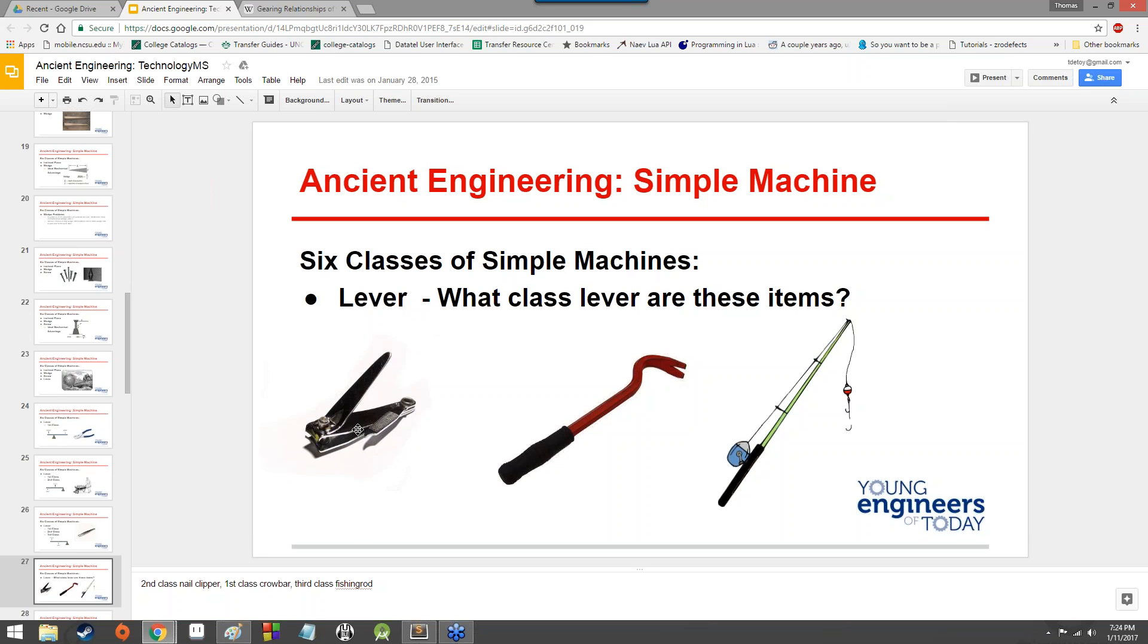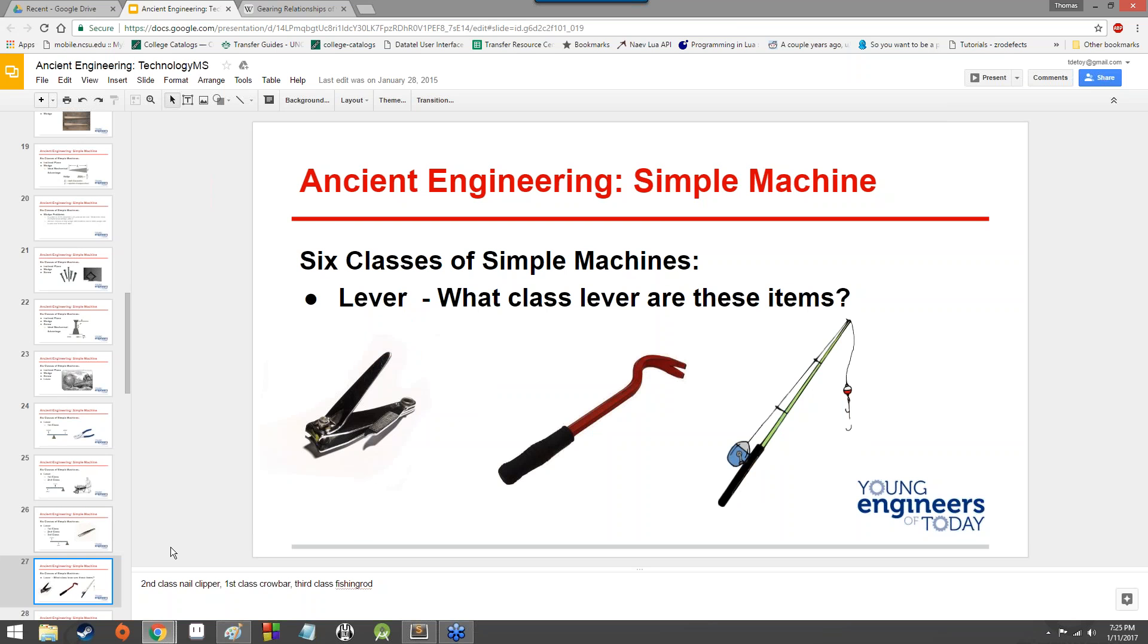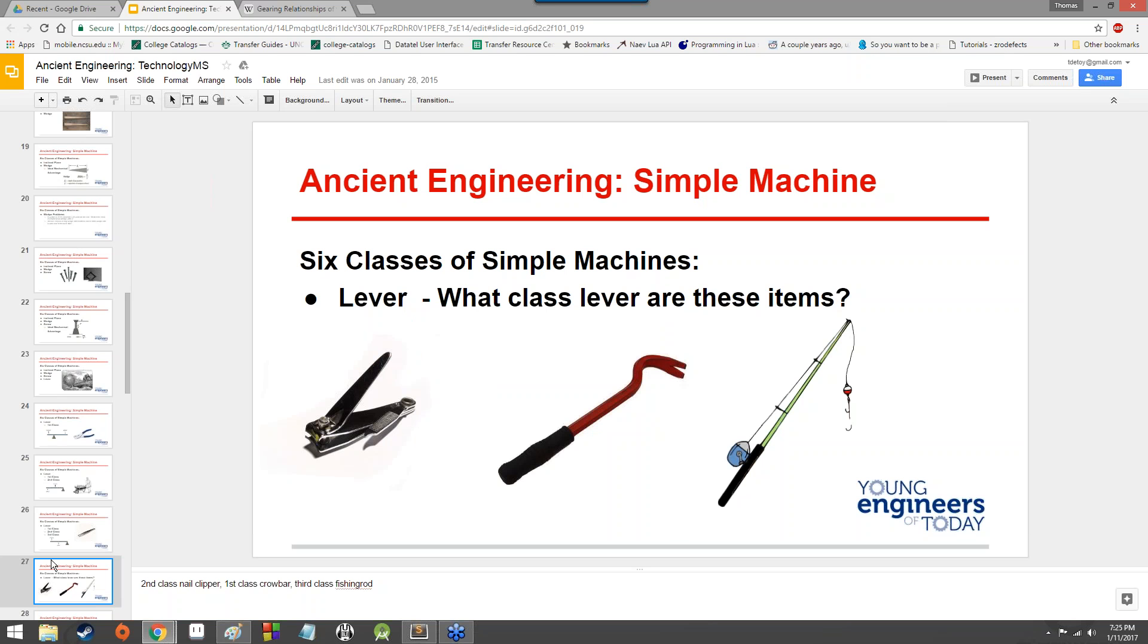What class of lever would each of these items be? So, for instance, how about the nail clippers? Think about where the fulcrum point is and where the input and the output are. Somebody thinks it's one where the fulcrum point exists between the input and the output. Somebody else thinks it's a third where the input lies in between the output and the fulcrum point. It's listed here as second class, but I would be more inclined to think that it's a third class.